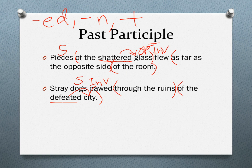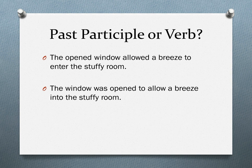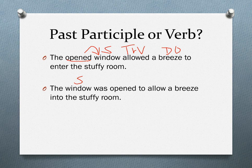Here's the same question: past participle or verb? In 'the open window allowed a breeze,' 'window' is the subject, 'allowed' is the verb, and 'breeze' is the direct object — a transitive verb. 'Open' is a verb describing 'window,' making it a past participle. In the next sentence, 'the window was opened' — 'opened' is the verb, not a participle. We have to find the sentence pattern first, then look for participles — verbs that act like adjectives.